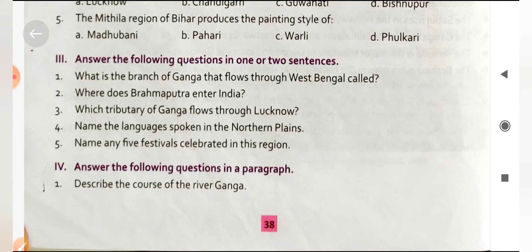Describe the food habits of the people of the Northern Plains. People in the Northern Plains eat a wide variety of food. Wheat is the main cereal eaten in the northern and western parts, while in Bengal and Assam, rice and fish are widely consumed.